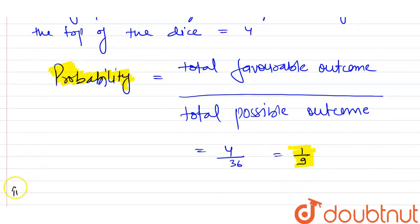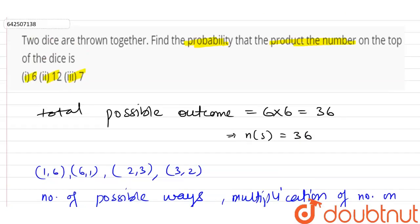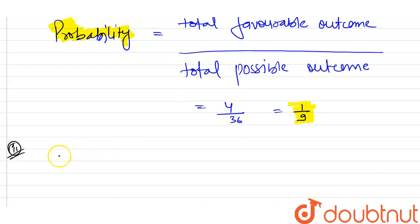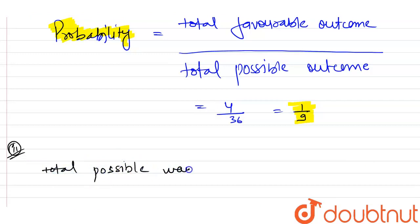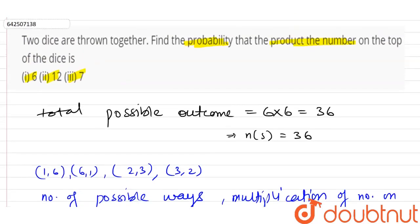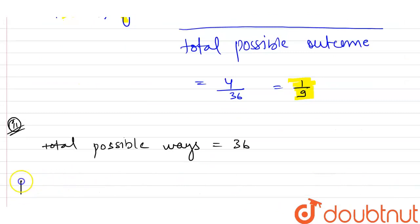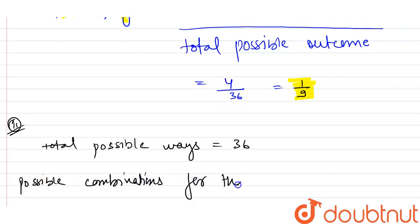In the second part of the question, we need to find the probability such that the product of the number on the top of the dice is 12. The total possible outcomes remain 36. We have to find the combinations whose product equals 12.